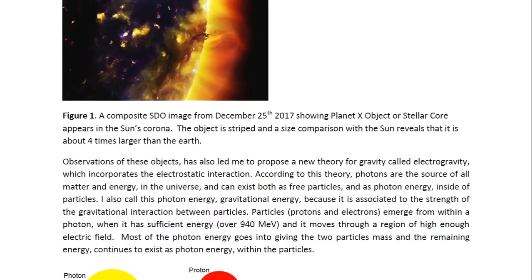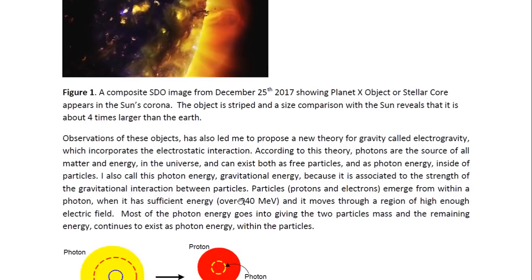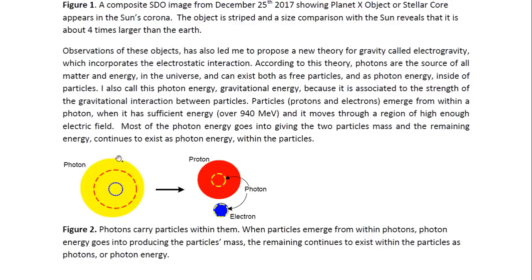I also call this photon energy gravitational energy because it is associated to the strength of the gravitational interaction between particles. Particles, that is protons and electrons, emerge from within a photon when it has sufficient energy, that is over 940 MeV, and it moves through a region of high enough electric field. Most of the photon energy goes into giving the two particles mass and the remaining energy continues to exist as photon energy within the particles.